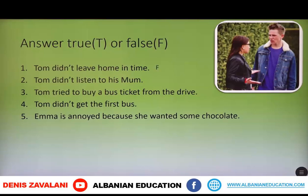It's false. The second: Tom didn't listen to his mum — that's false. The third: Tom tried to buy a bus ticket from the driver — that's true. The fourth: Tom didn't get the first bus — that's true too. And the last one: Emma is annoyed because she wanted some chocolate — that's true also.